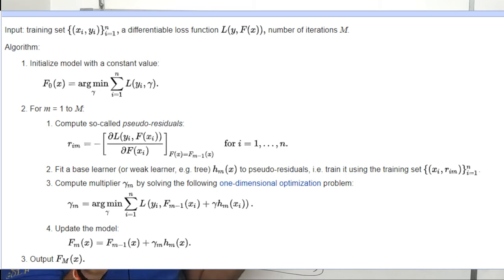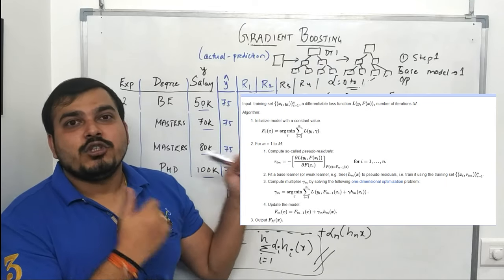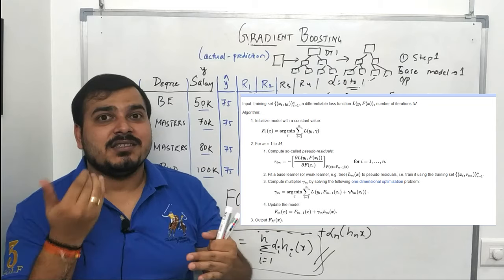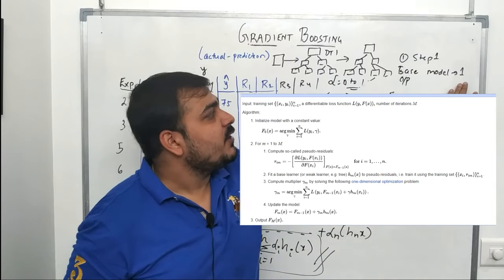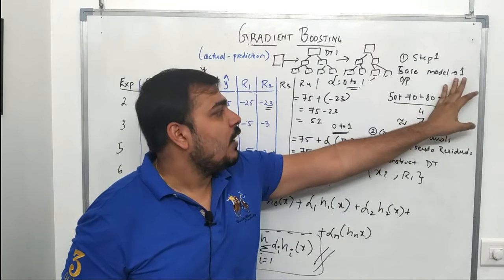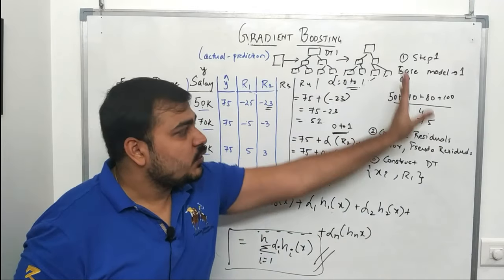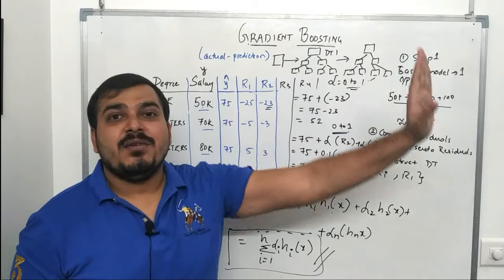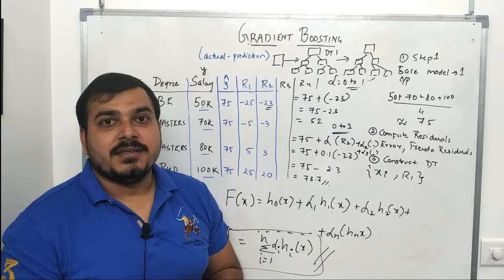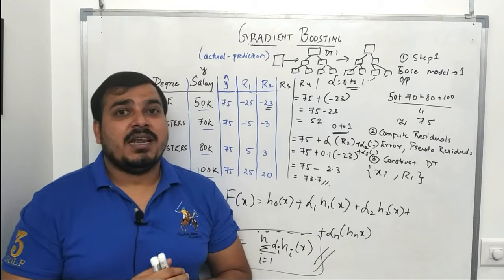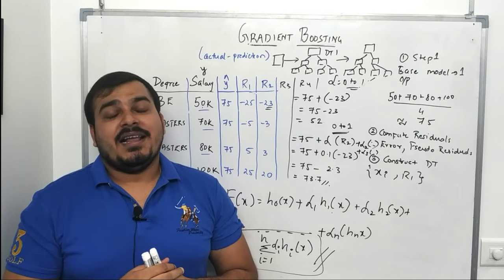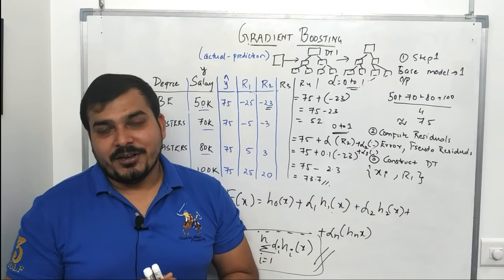In the next video I'll discuss the pseudo algorithm in detail, including the Wikipedia reference which I'll link in the description. I'll explain mathematically how the base model average is derived, how residuals are computed, and how the process repeats for N trees. Please subscribe if you haven't already — see you in the next video!